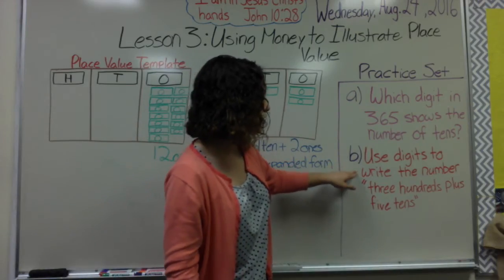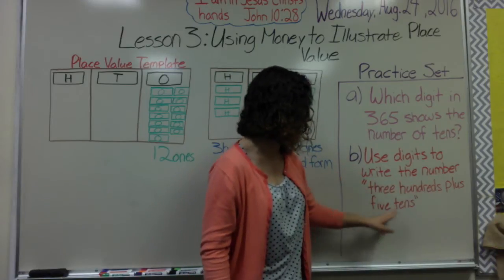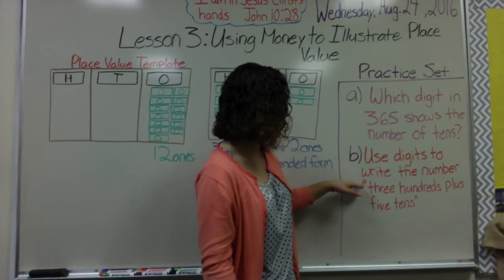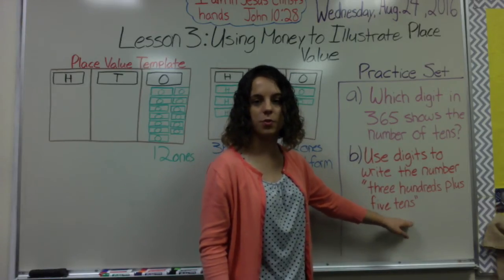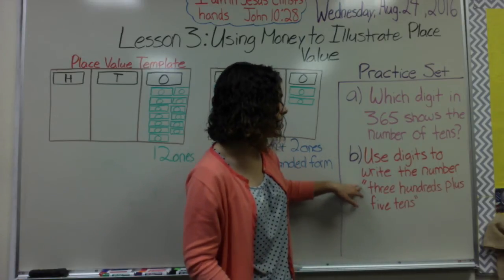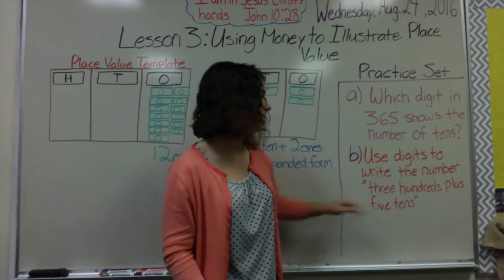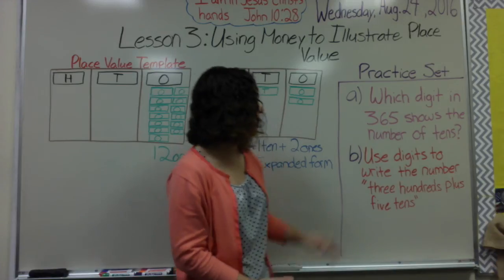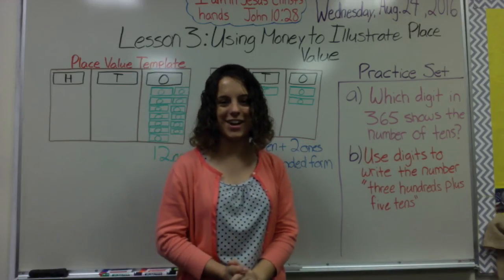Problem B says: use digits to write the number three hundreds plus five tens. Remember your place value — I have my hundreds and tens, but there are no ones, so which digit will you put in the ones place? It should be clear from looking at this problem. I'll go ahead and check that work from your notes and the problems you did in class. Thank you very much for listening.